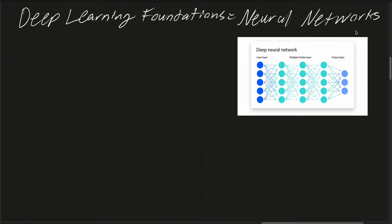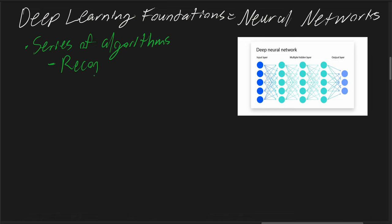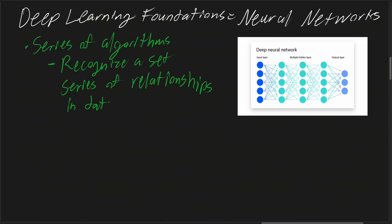At their core, neural networks are a series of algorithms that strive to recognize underlying relationships in a set of data through a process that mimics the way the human brain operates. This is why neural networks have found immense application in fields ranging from speech recognition and image processing to drug discovery and autonomous vehicles.